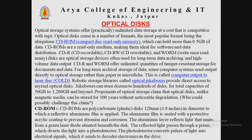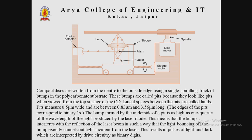CD-ROMs are polycarbonate or plastic disks that are 120 mm or 4.8 inches in diameter, to which a reflective aluminum film is applied. The aluminum layer is sealed with a protective acrylic coating to prevent abrasion and corrosion. The aluminum layer reflects light that emits from a green laser diode situated beneath the disk, and the reflected light passes through a prism which diverts the light into a photo detector. The photo detector converts the pulses of light into electrical signals which it sends to the decoder electronics in the drive.